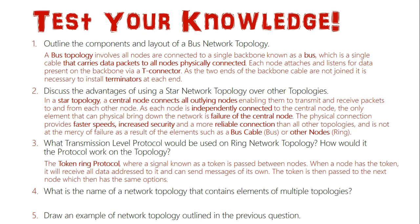Question four: what is the name of the network topology that contains elements of multiple topologies? That is a hybrid topology, because it combines two or more topologies into one network. For example, if you have a star network with a router in the center that also has wireless capabilities, that's a hybrid topology — it incorporates both wireless and star topology into a single topology.